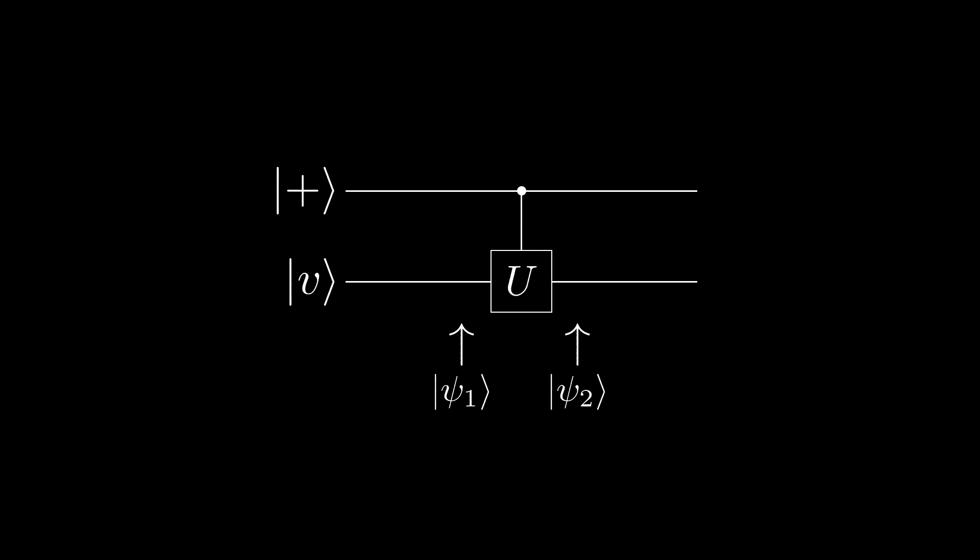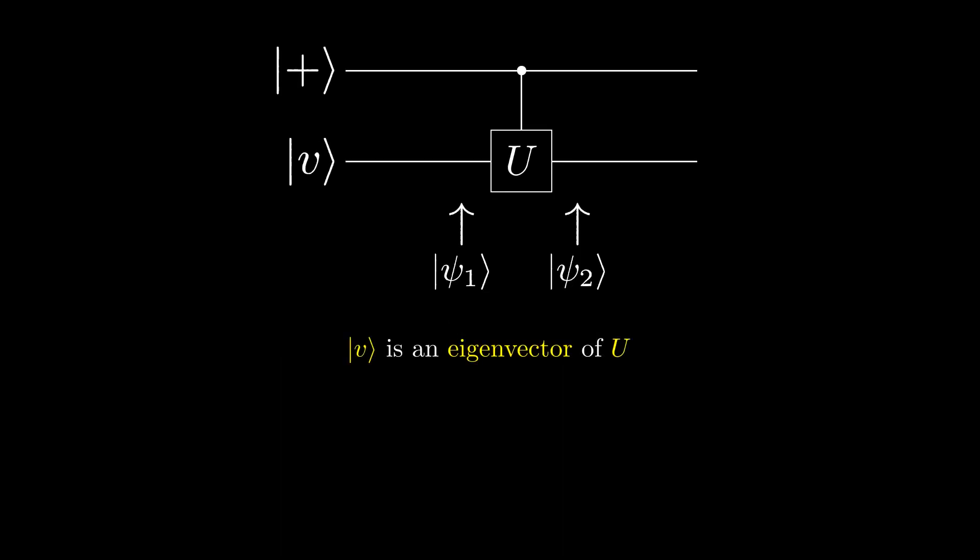Let's say that v is an eigenstate of U, so if we apply the U gate to the state v, we get e to the i theta v, since all eigenvalues of quantum computers can be represented as e to the i theta.